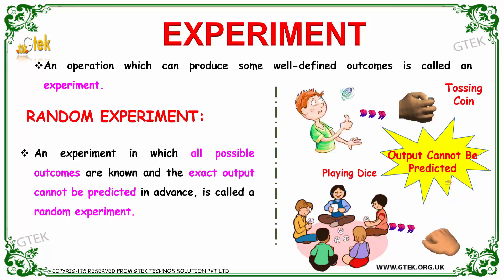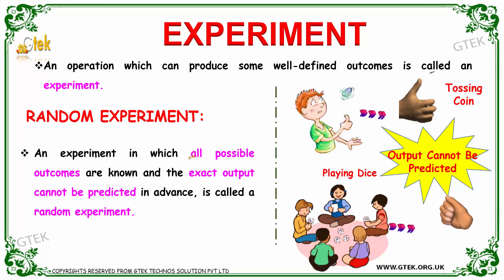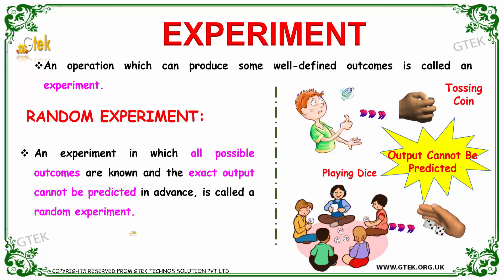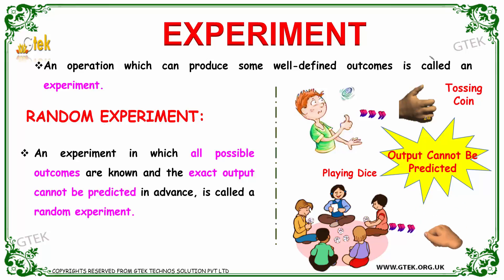What are the possible outputs? That's called probability. An experiment in which all possible outcomes are known and the exact output cannot be predicted is called a random experiment. Tossing a coin is your random experiment.